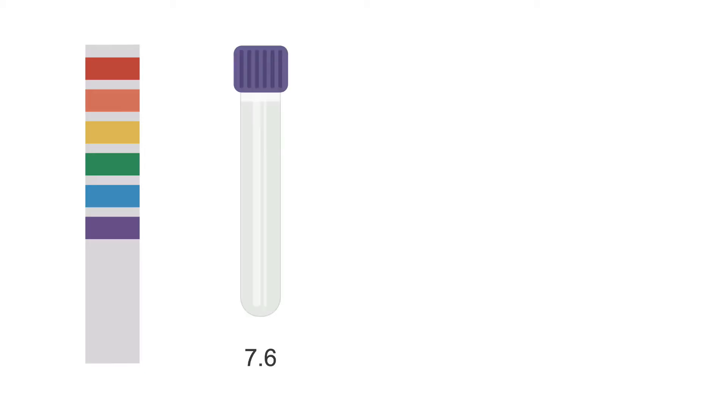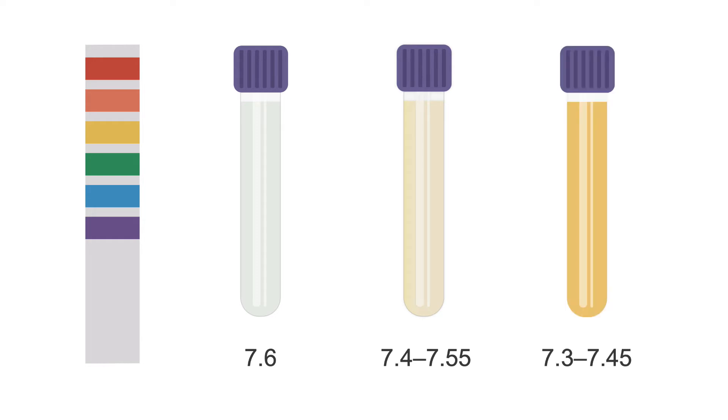First is pH. The pH of normal pleural fluid is 7.6. Generally, transudative pleural effusions have a pH ranging from 7.4 to 7.55. Most exudates have a pH ranging from 7.3 to 7.45.